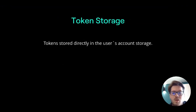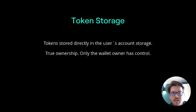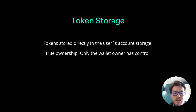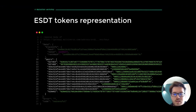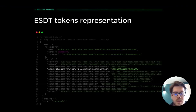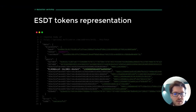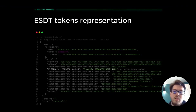From the token storage perspective, the information for the wallet's tokens is stored in the account storage, with only the wallet's owner having control over it. This ensures true ownership and prevents unauthorized changes or transfers of tokens. Since there is no smart contract involved, vulnerabilities that could result in lost funds are eliminated. Think of account storage as a list of key-value pairs. Tokens are stored using a key created by concatenating the ESDT string with the hex encoding of the token identifier, and the value represents the token type combined with the quantity held in the wallet.